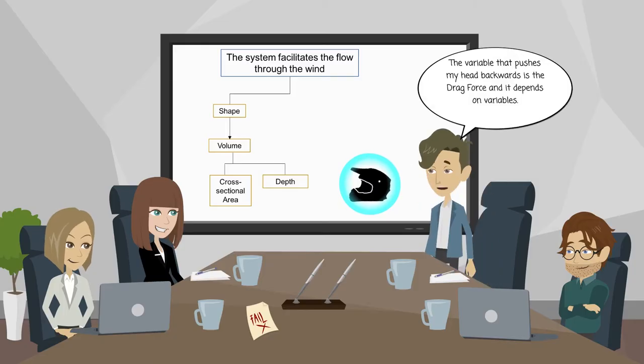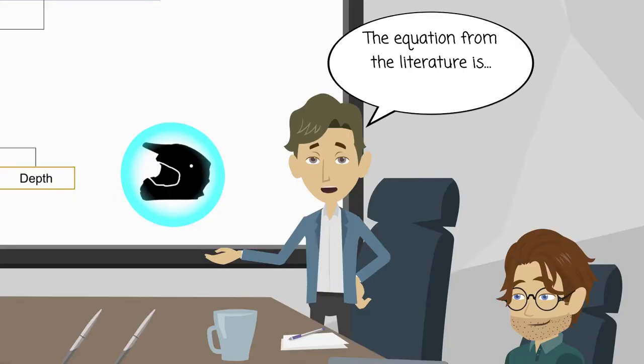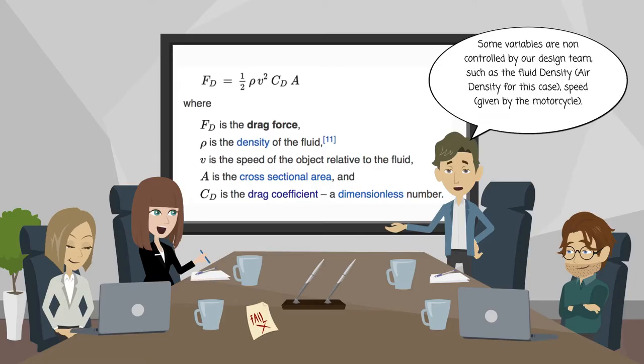The variable that pushes my head backwards is the drag force and it depends on variables. The equation from the literature is: some variables are non-controlled by our design team, such as the fluid density, air density for this case, speed given by the motorcycle.